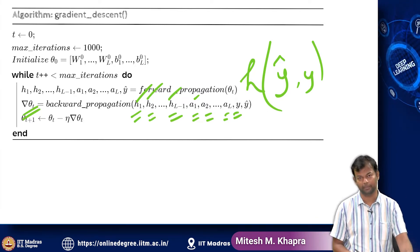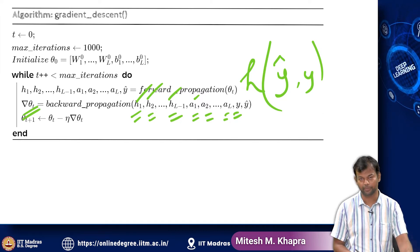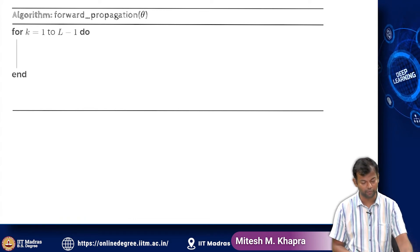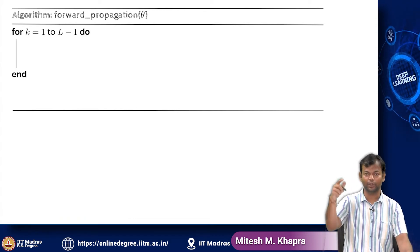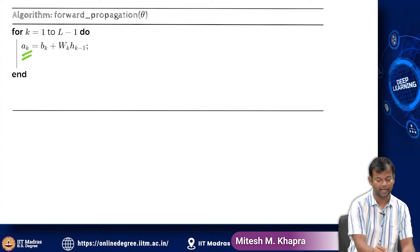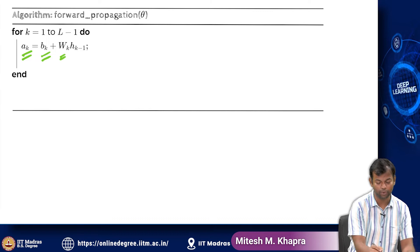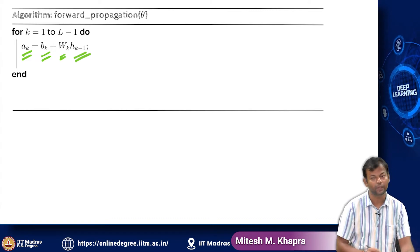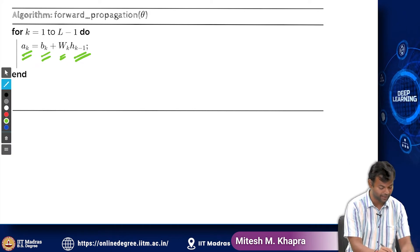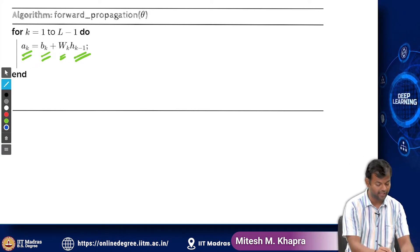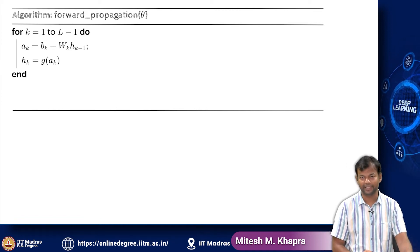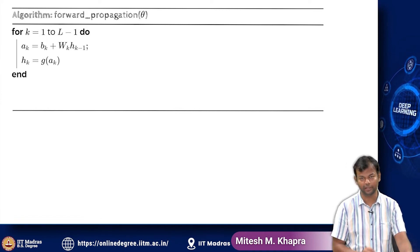Once you have the gradients, you update the weights using the gradient descent update. Now let us zoom into the forward propagation and the backward propagation. For k equal to 1 to L minus 1, you compute ak as bk plus wk times h(k-1), where h0 equals x. Then you compute hk by applying the activation function on the ak vector. You just need to run this loop L minus 1 times.